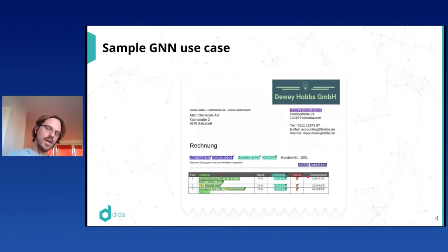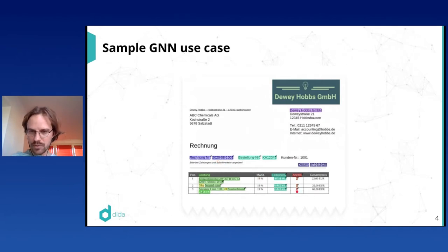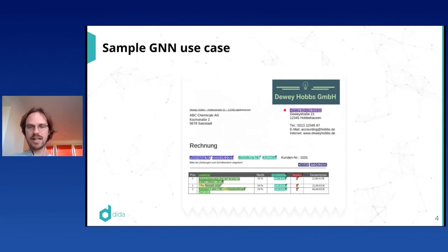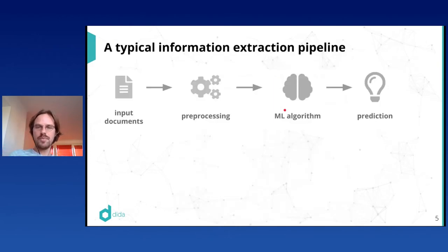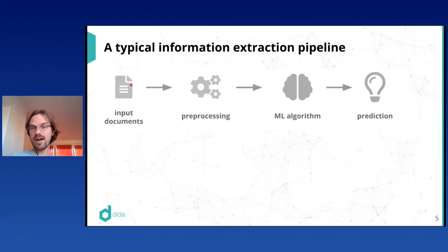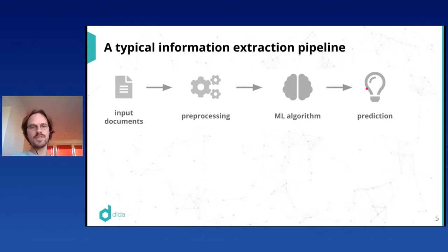A standard language model which only looks at text sequentially would find a quantity like '2' completely out of the blue, because it follows information not really related to quantities. We would like a model that can get a broader view of the data. Here is a typical information extraction pipeline: input documents, pre-processing, then a machine learning algorithm that produces a useful prediction.